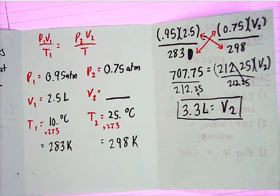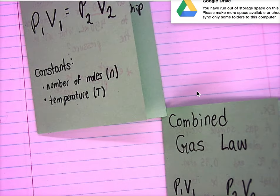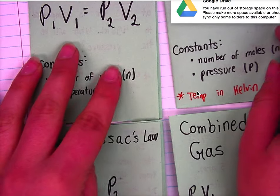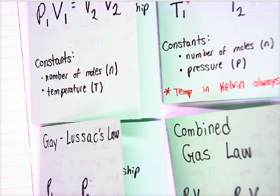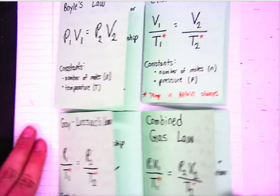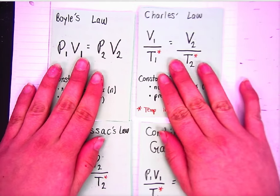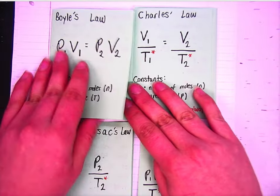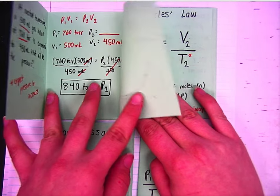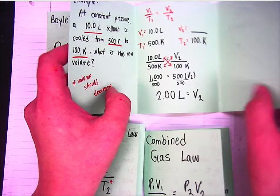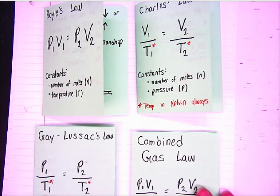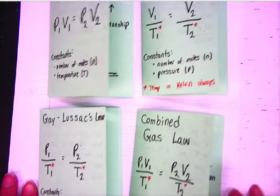Once you guys are done writing in all of them, glue them in so that you have your nice pretty little foldables on the page — all four of them glued down with all the flaps in them. We'll fill in those last flaps with some demos.